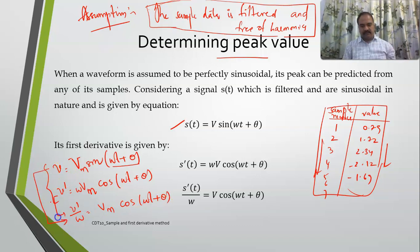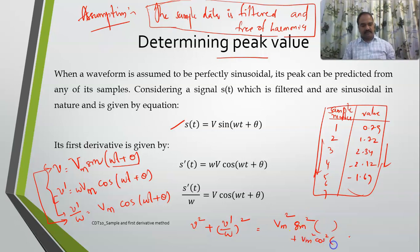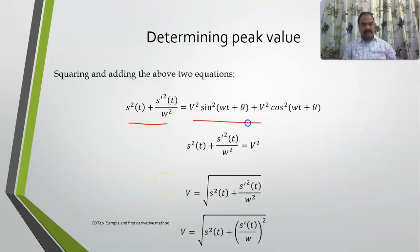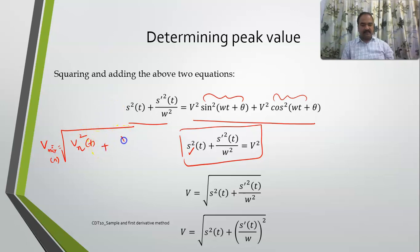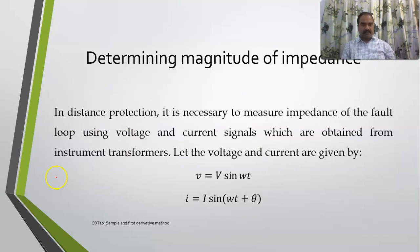Now if you square these two equations and add them, you get: v² + (v'/ω)² = Vm²·sin²(ωt+θ) + Vm²·cos²(ωt+θ) = Vm². Since sin² + cos² = 1, this simplifies to Vm². At the nth instant, Vm² = vn² + (v'n/ω)². The same applies for current as well.